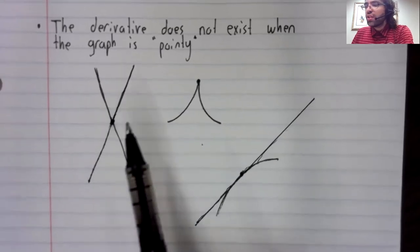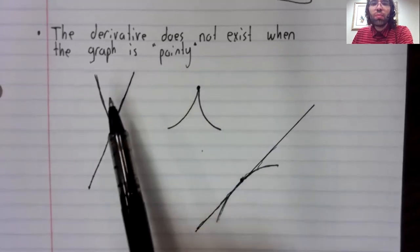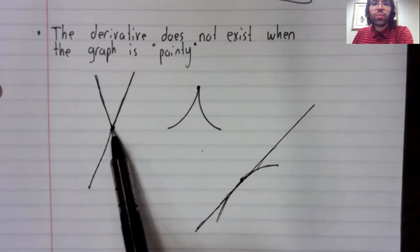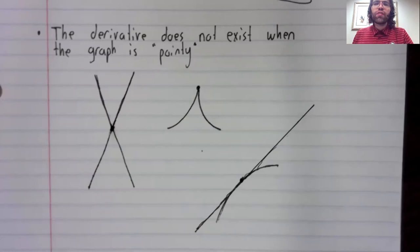So this is a unique problem that occurs when we have these sharp corners, and the derivative at those corners does not exist.